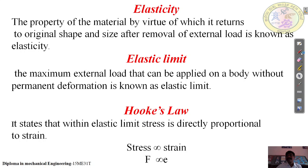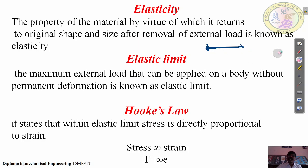Let us take a metallic scale, fix it at one end, and apply load P — it may be 200 grams, 300 grams. What happens? The scale will bend. And when you remove the load P, the scale will return to its original shape. This property of the material is known as elasticity.